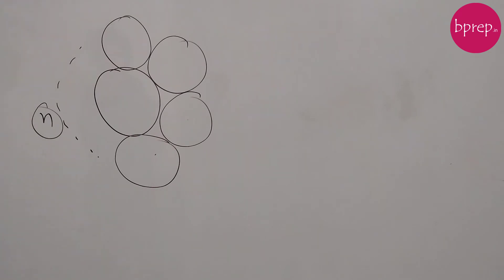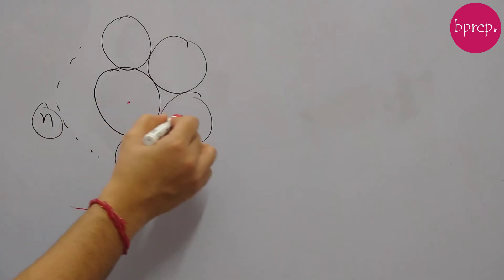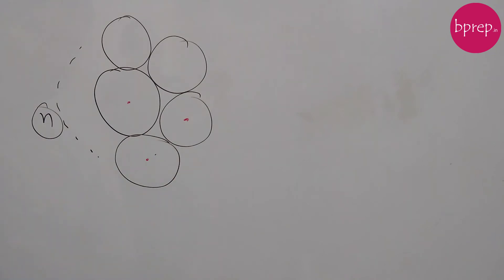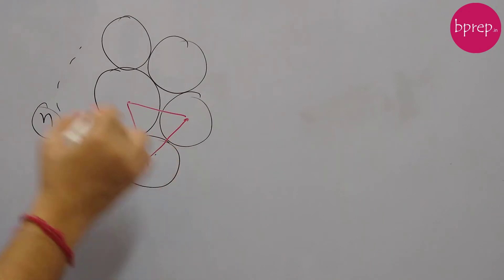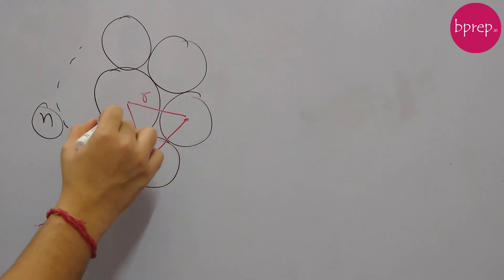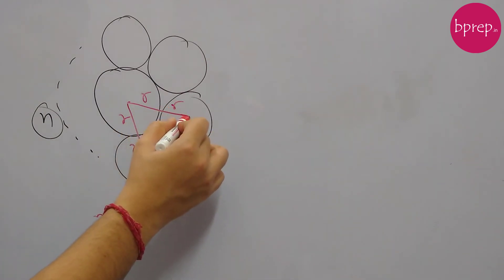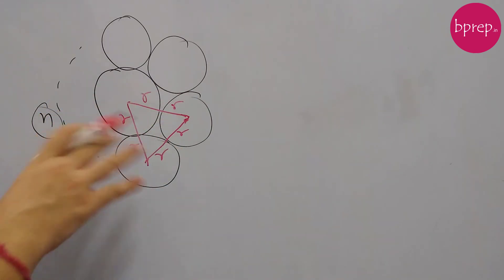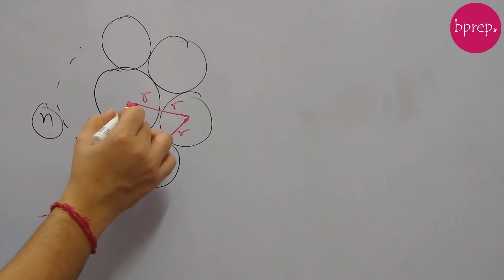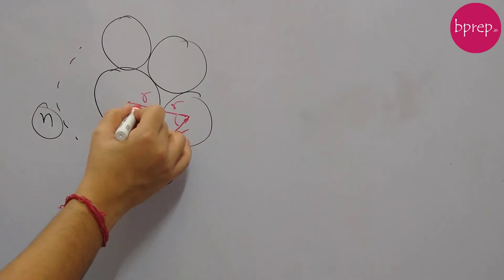Let's say the radius of the coin is R. Now if we join the centers of these coins, this distance is R, this is R, this is R, this is R, and this is R — this is also R. So the triangle formed with sides 2R is an equilateral triangle. So if this is an equilateral triangle, all angles will be 60 degrees.